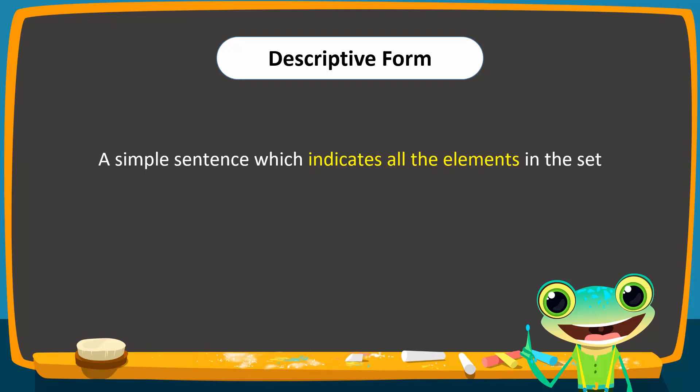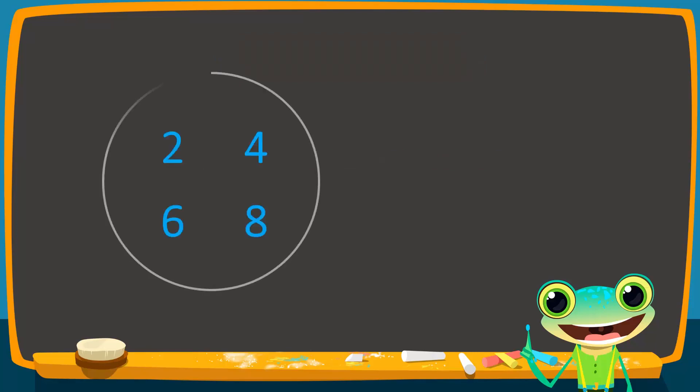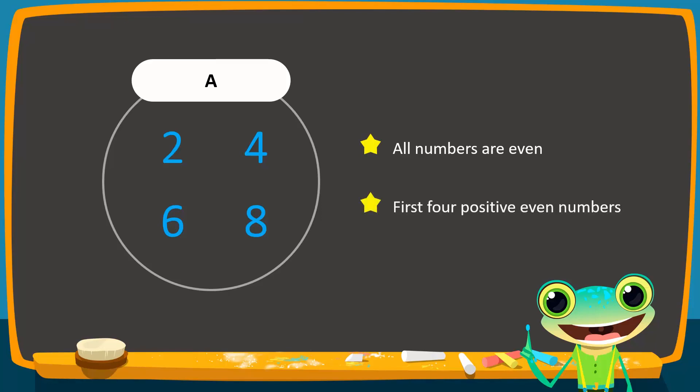For instance, consider this set of numbers labeled A. Observe that these are all even numbers since they are divisible by 2. However, only the first four positive even numbers are shown. We will then express this group of numbers as A equals set of first four positive even numbers.